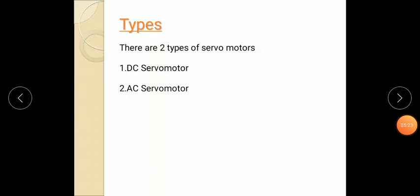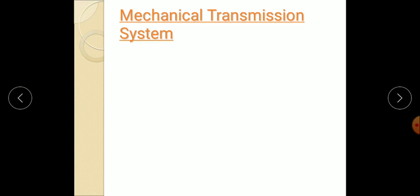Next, the types. There are two types of servo motors. First one is DC servo motor. Second one is the AC servo motor.